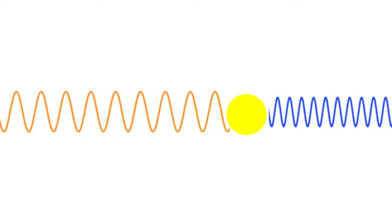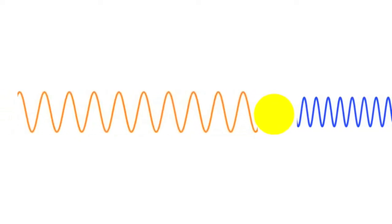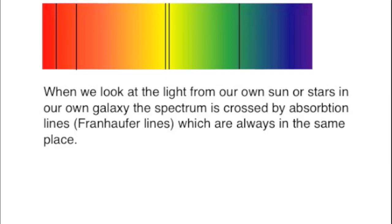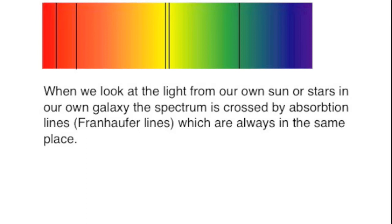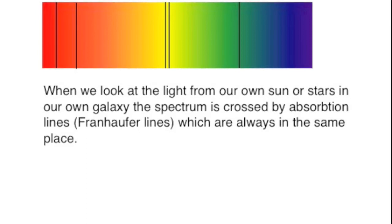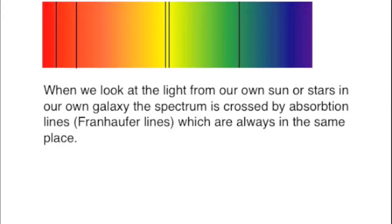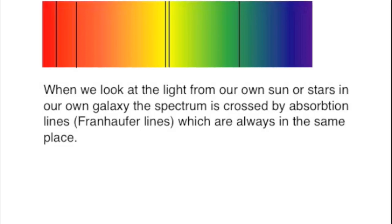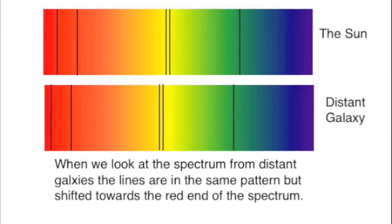The spectrum from different stars does vary, but there are lines across those spectra which are the same, no matter which stars you're looking at. These black lines are called the Fraunhofer lines, and they're caused by absorption of elements in the star's atmosphere. The stars from distant galaxies show exactly the same pattern of lines, but they are usually shifted slightly towards the red end of the spectrum.